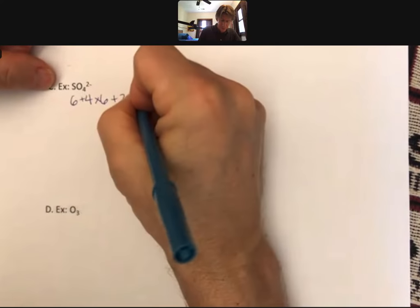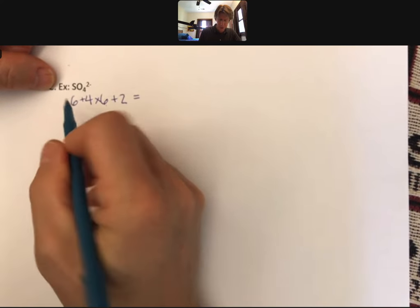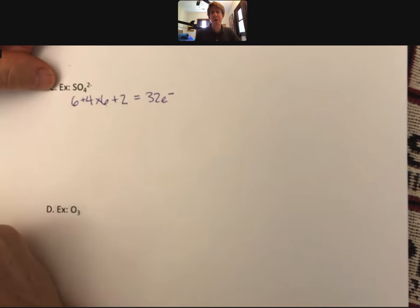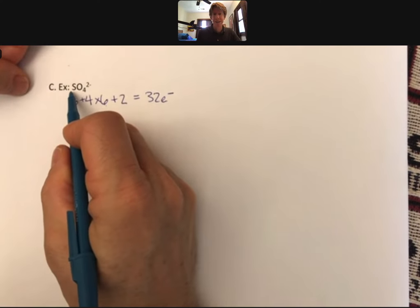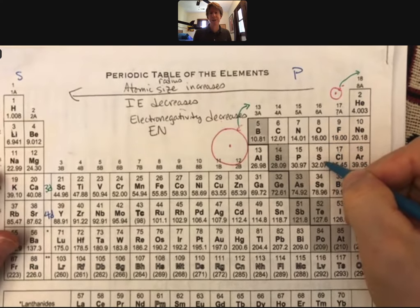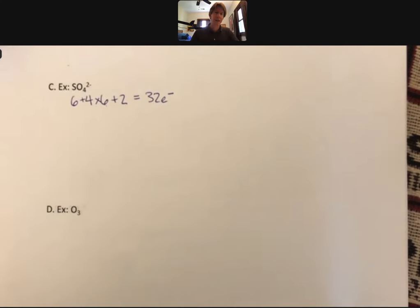Then there are four oxygens, and each one of those has six valence electrons. And then add two more for charge. We end up with 24, 26, 28, 30, 32. There are 32 electrons to put into this Lewis structure. Sulfur is the less electronegative element, so as you go down, electronegativity decreases. So sulfur is less electronegative than oxygen.